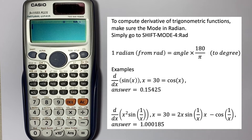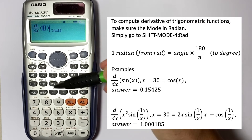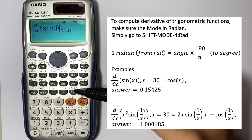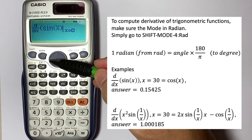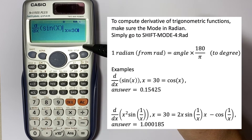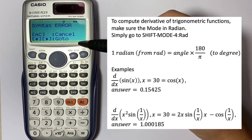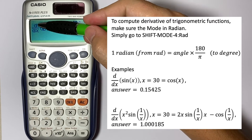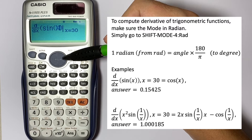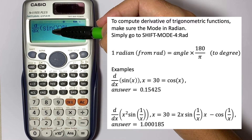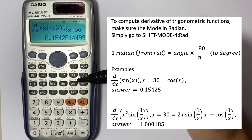Now let's compute the derivative of sin(x). Go to Shift derivative, put in the trig function sin, and then Alpha x. Set x equal to 30. If you press equals and get a syntax error, go back to the equation — sin(x) already adds a closing parenthesis, so with the outer d/dx parenthesis you have two open and need two closed. Once corrected, the answer for the derivative of sin(x) at x=30 is 0.15425.